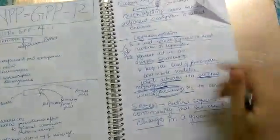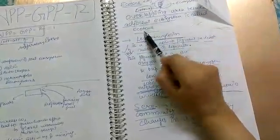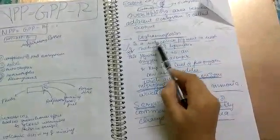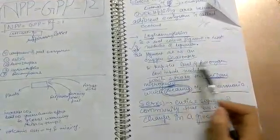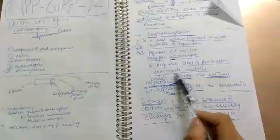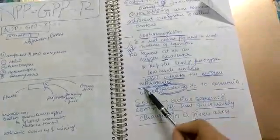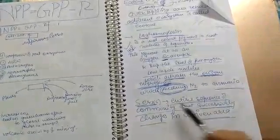Last is ecotone: the overlapping area between adjacent ecosystems. Leghemoglobin, very important: red colored pigment in root nodules of legumes. This pigment acts as oxygen scavenger and keeps the level of free oxygen low inside the nodule, which activates the enzyme nitrogenase which reduces nitrogen to ammonia.